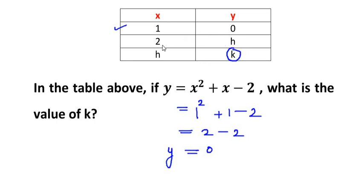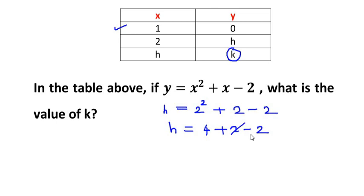Now let us see what we will get the value of y when the x value is 2. Now y has become h, so I'm going to substitute h in place of y. In place of x, I'm going to substitute 2. So 2 square plus 2 minus 2. So h equals 2 square is 4 plus 2 minus 2. So plus 2 and minus 2 gets cancelled and we get the value of h as 4.